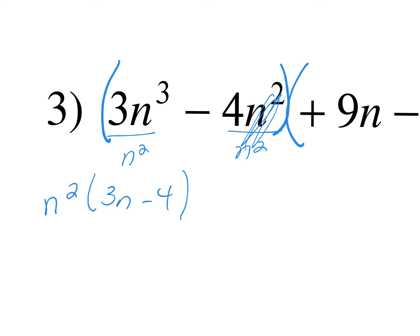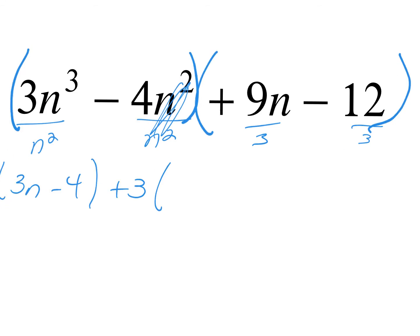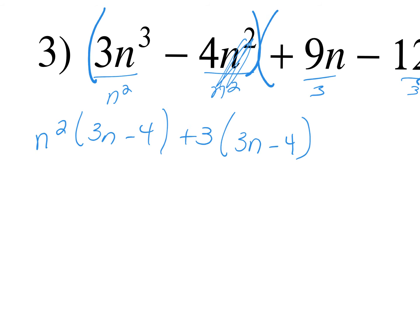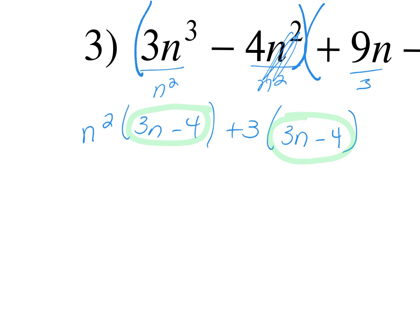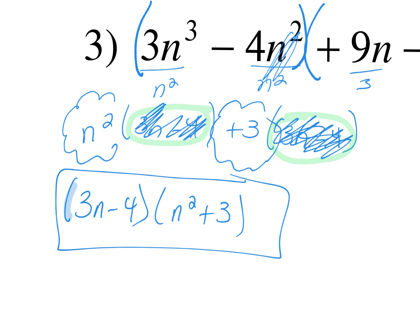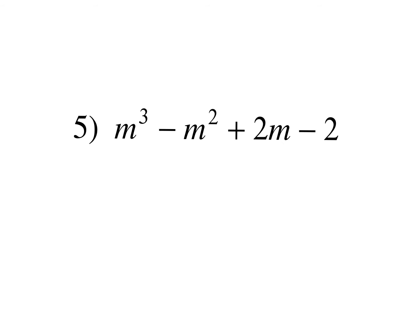If I divide out n squared, I'm left with 3n minus 4. Now the second parentheses: 9n minus 12 — what can I take out? A positive 3. When I divide out my 3 I'm left with 3n minus 4. Do you see how I have the same parentheses two times? So I divide out that 3n minus 4, write it one time out in front, and what's left over — n squared plus 3 — gets its own parentheses.